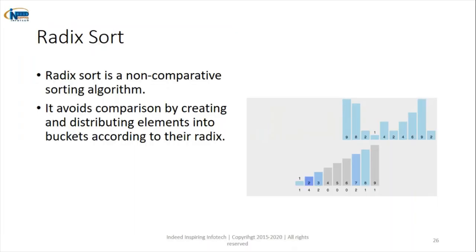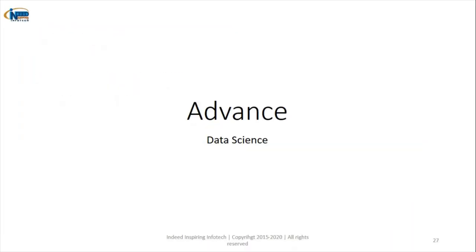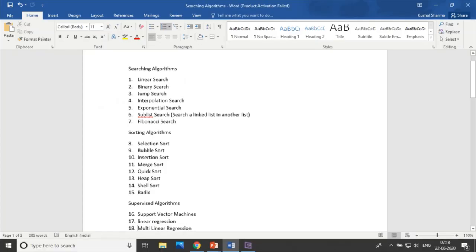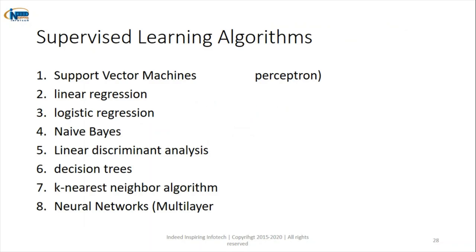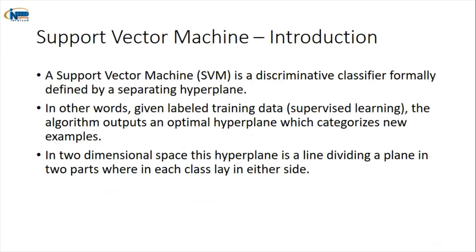Now let's move towards the advanced section — data science algorithms. We will start with support vector machines, which are supervised learning algorithms. Supervised basically means that you have input and output data already given, and based on that input-output data your algorithm will work. Support vector machines work on that kind of data.